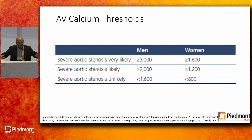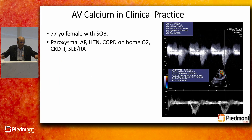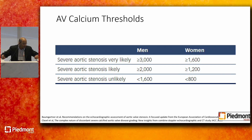Not only is aortic valve calcium score associated with severity of aortic stenosis, it also has independent prognostic value. This parallels the physiology and anatomy we deal with in coronary artery disease — you have to combine the data from valve anatomy with the physiology of gradients before telling a patient they can return later. This applies to both bicuspid and trileaflet valves.